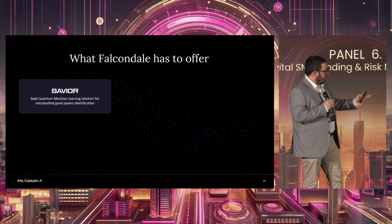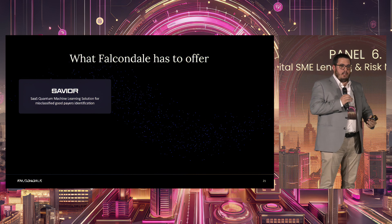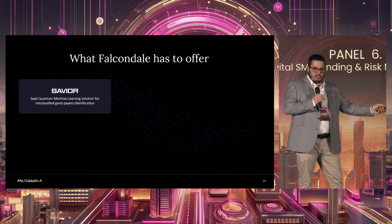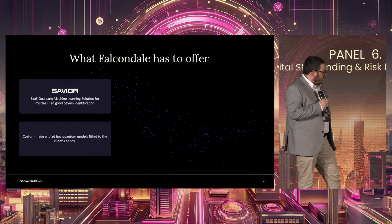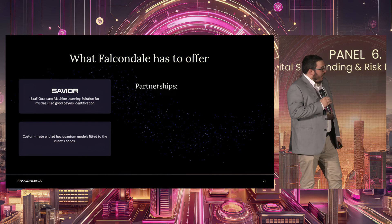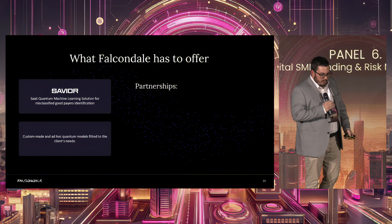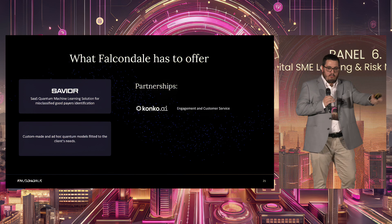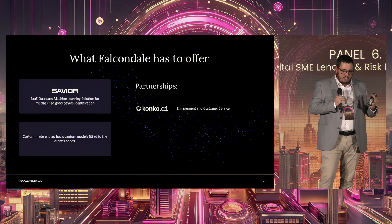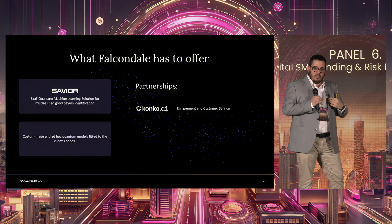So what do we have to offer? We have a model called Savior, where after a company has already decided, we pick up the rejected applicants, screen them, and give back a list of the good ones to offer loans to. We also build custom quantum models fitted to what our clients need. And we have partnerships because we know this doesn't solve every problem — getting companies to apply in the first place is another challenge. One partnership is with Conco, which builds AI agents tailored for credit funnels.